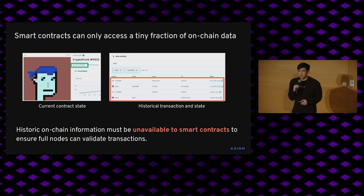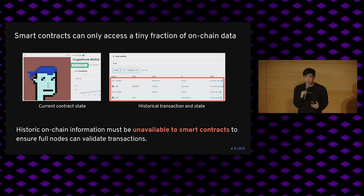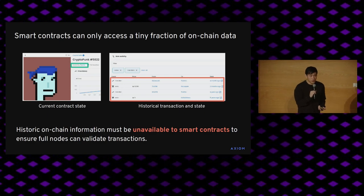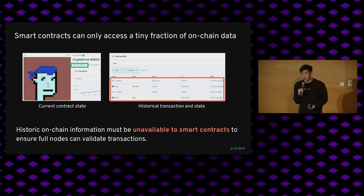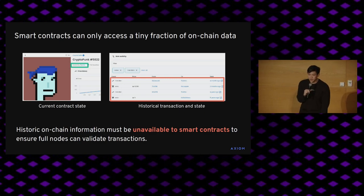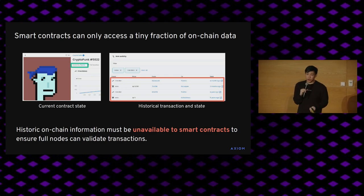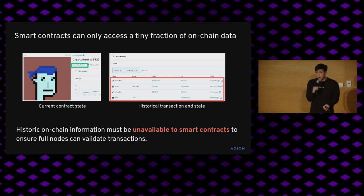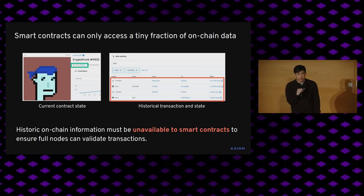Now let's think about the situation of a smart contract viewing the state of Ethereum — it's quite different. If you go to an application like OpenSea and try to identify which pieces of data on the page are actually accessible to the OpenSea smart contract, you'll find there's exactly one number on a listing page that's accessible: namely the current owner of the relevant NFT. There's all this historic information about past states, transactions, and receipts on the chain that's fundamentally unavailable to smart contracts.